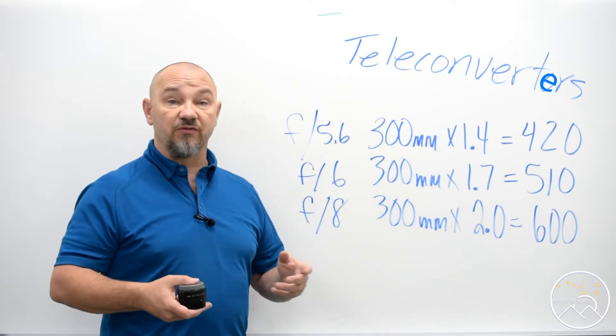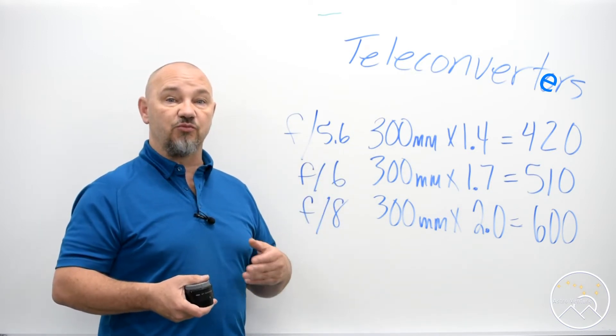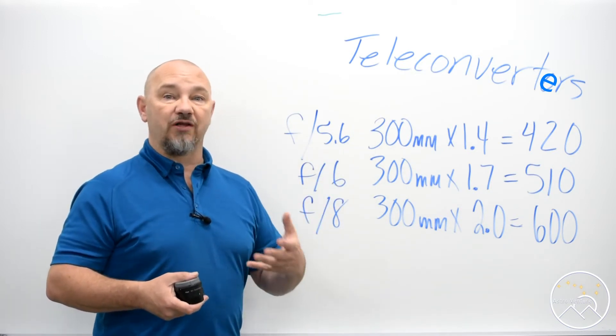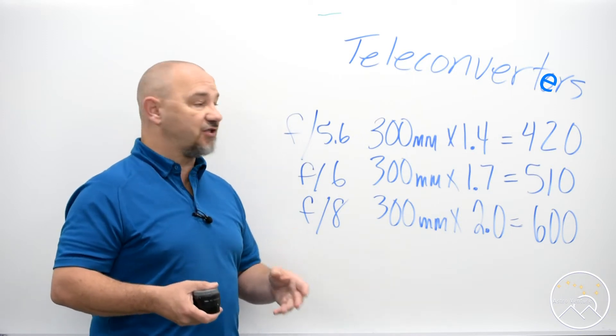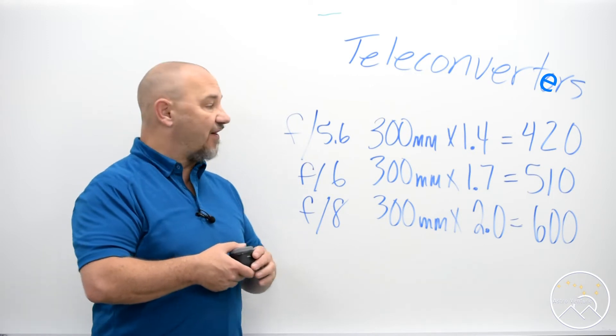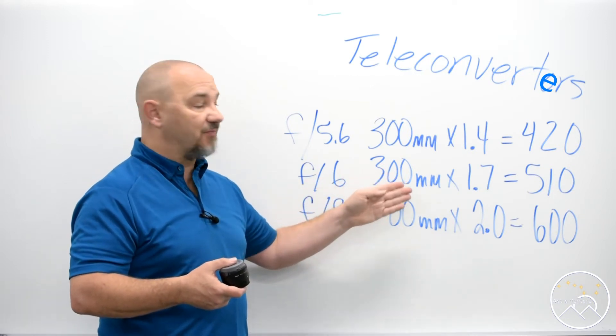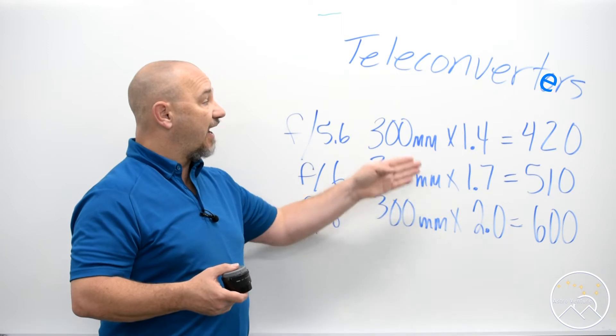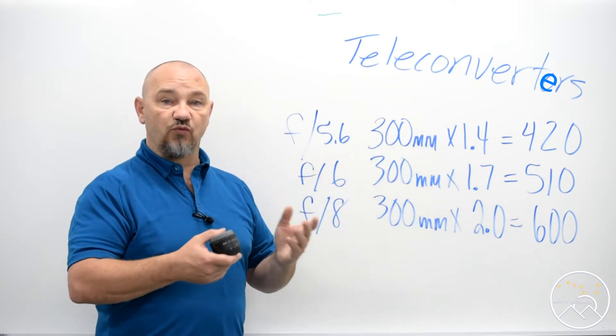The 1.4 generally does a really good job provided that you put it on good quality glass and you don't lose much. I have found and personally own the 1.7, I found it to be the compromise between giving me that extra length but not getting too soft and not giving me quite enough reach.